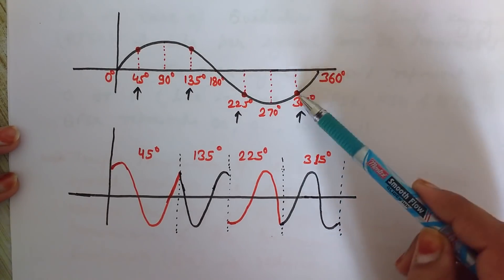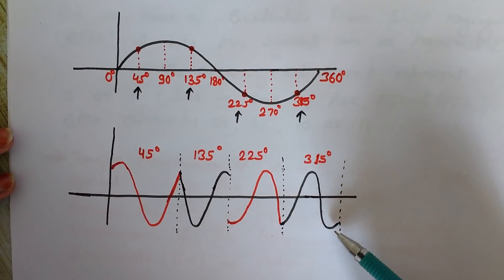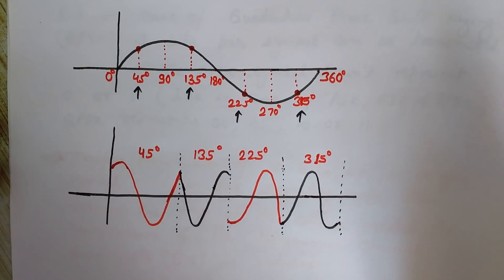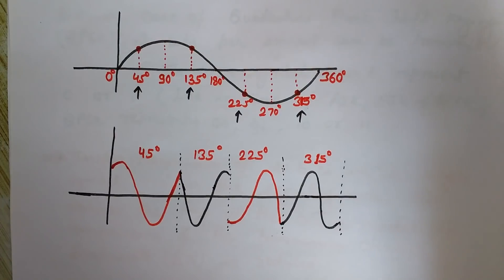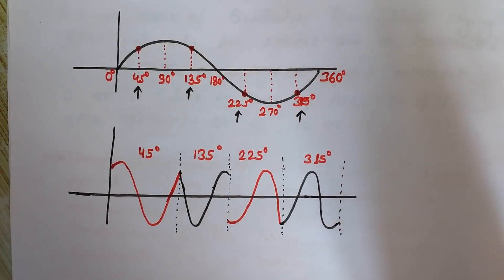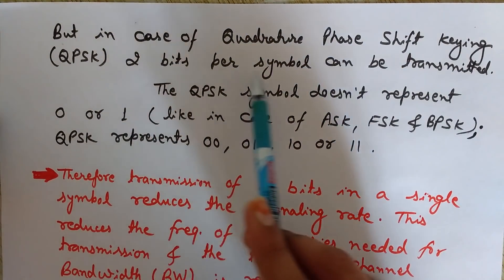These are the four phases that we use in quadrature phase shift keying. Because we are transmitting two bits per symbol, we have four combinations, and for these four combinations we need four phases to avoid intermixing, so that at the receiving end it can easily detect these waves in different phases. If they were all in the same phase then it would be difficult to distinguish them. In QPSK, two bits per symbol can be transmitted.